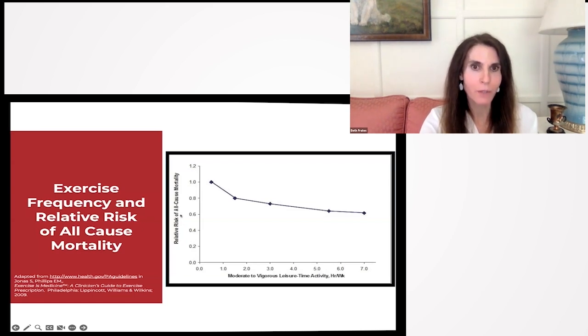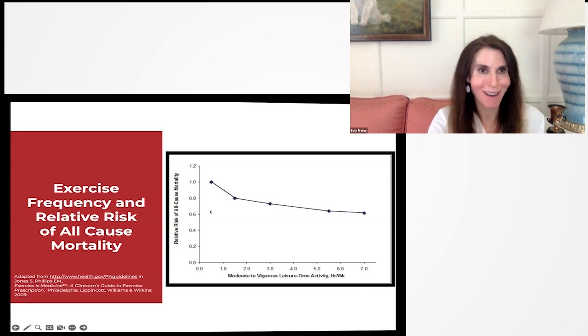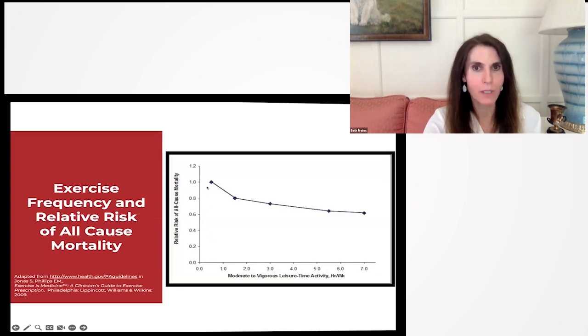On the y-axis, we have relative risk of all-cause mortality. So think to yourself how many minutes you're getting of exercise and where you would fit on this graph. If you're getting per week about a half hour, maybe 30 or 40 minutes or so, then you're at a one, the highest level for being at risk for mortality. If you can just bump that up to 70 minutes, 80 minutes in the week, so 10 minutes a day, you reduce your risk of dying significantly. That's the steepest part of the curve, the steepest slope.